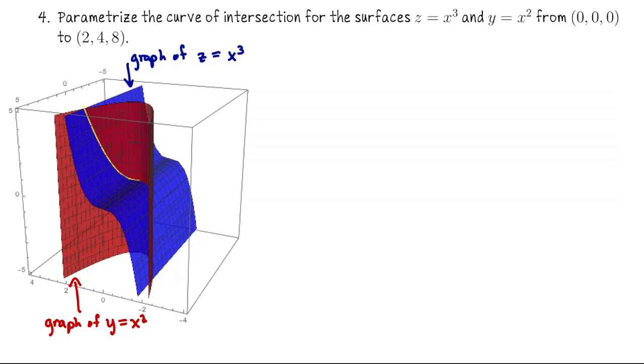These two surfaces intersect and I've tried to highlight the curve of intersection. Let me do it a little bit more visually here. So we want to parametrize this curve of intersection and we want to go from the origin out to the point 2, 4, 8. I don't think we actually have that point pictured here because it looks like z goes up to 5, but you know what I mean. So we're going to keep going up until we reach the point 2, 4, 8.